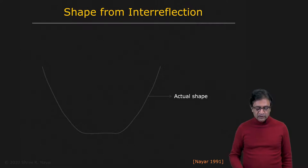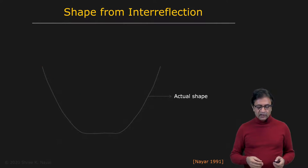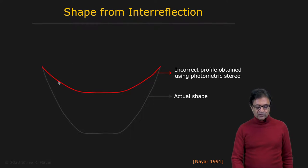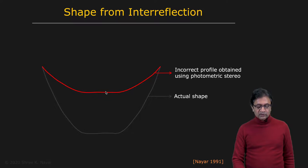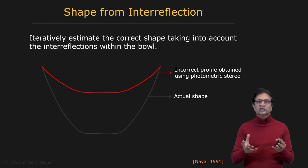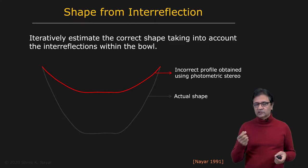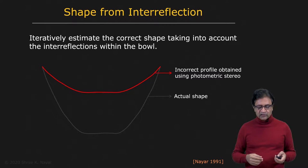So how do we deal with this? Here is a simple algorithm. This is the actual shape of the cup we want to recover — a Lambertian cup. When you apply photometric stereo due to interreflections, you actually end up with a shallower shape. We're showing a cross section of the cup. What you can do is use this inaccurate shape to get a first estimate of what the interreflections would be received by each point on the surface, and use those interreflections to correct the intensities produced by each light source, then recompute the photometric stereo result. Once you get another shape, you repeat the process.